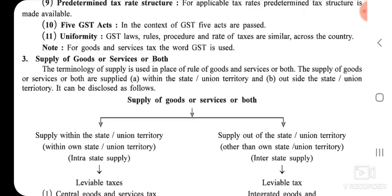Third point: Supply of Goods or Service or Both. Sometimes there is supply of goods, sometimes supply of services, and sometimes both goods and services together. The terminology of 'supply' is used in place of sale of goods and services or both.